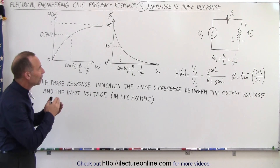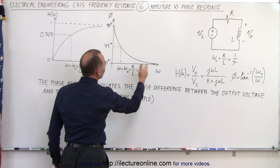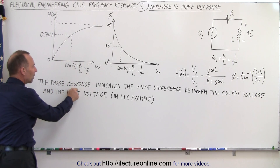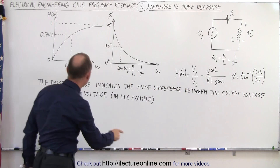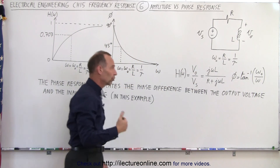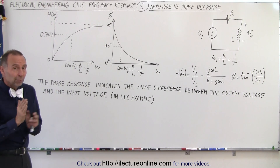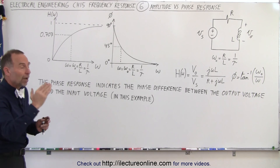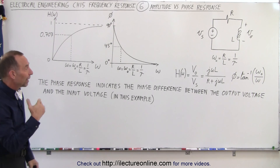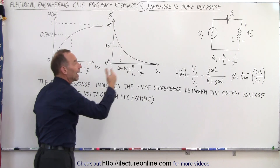What about the phase response? When the frequency is zero, the phase response is 90 degrees. When the frequency goes to infinity, the phase response goes to zero. The phase response indicates the phase difference between the output voltage and the input voltage, since the response function is the output voltage over the source voltage. The phase angle is not the difference between the current and the voltage, but the difference between the output voltage and the input voltage — that's really important to understand. So when the frequency goes to zero, there's a 90 degree phase difference between the output voltage and the input voltage.